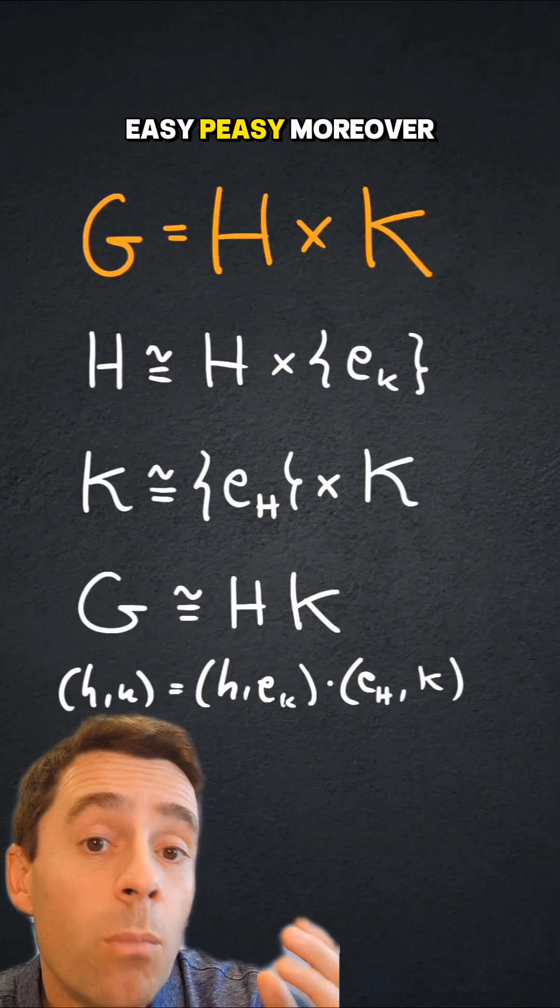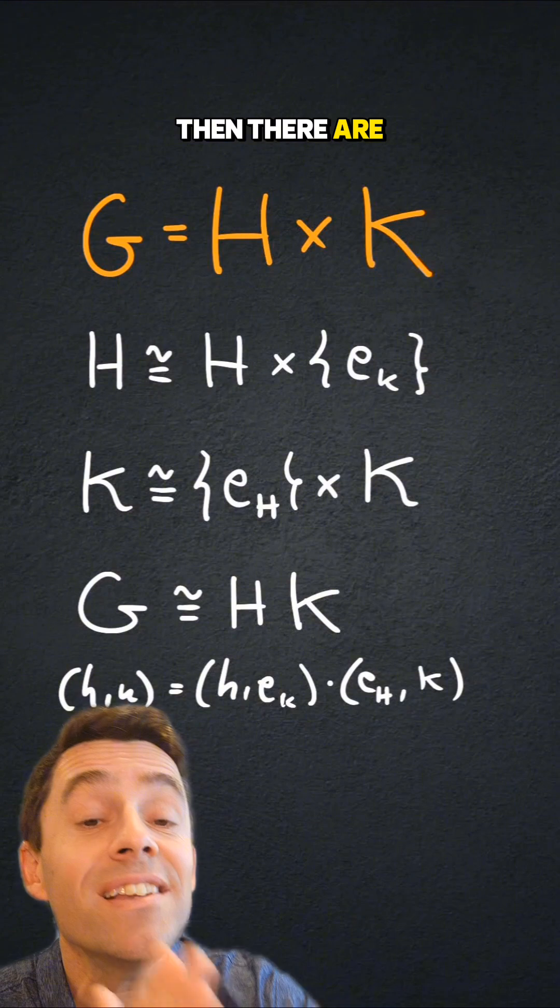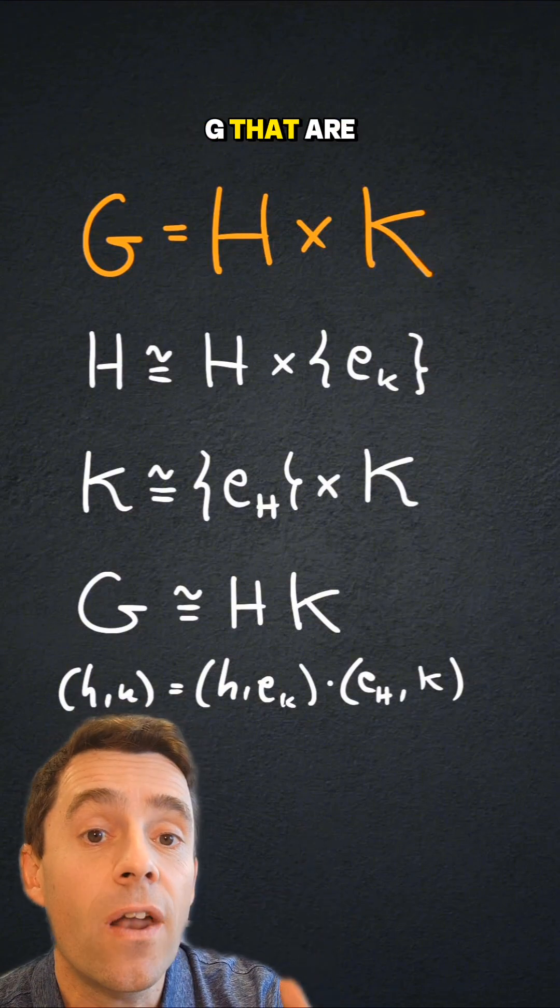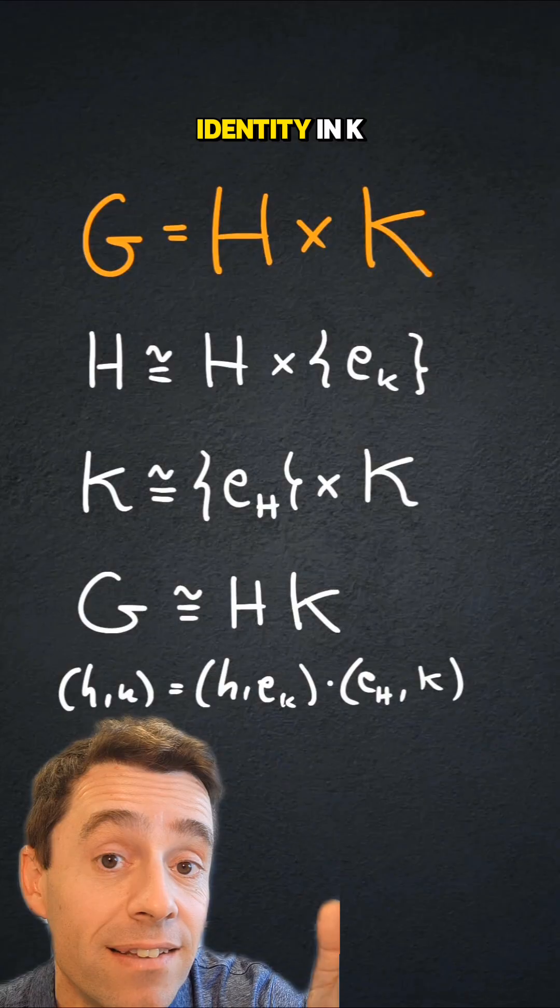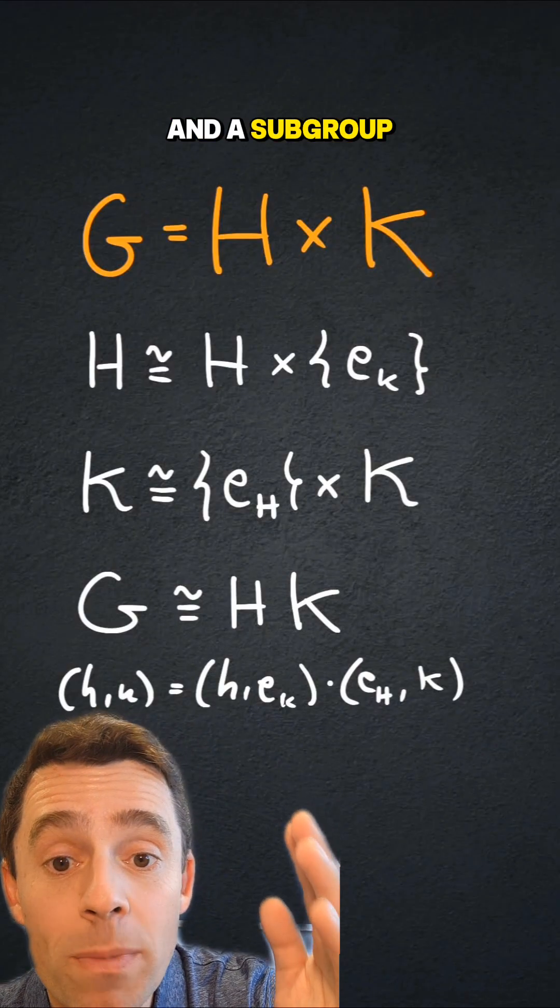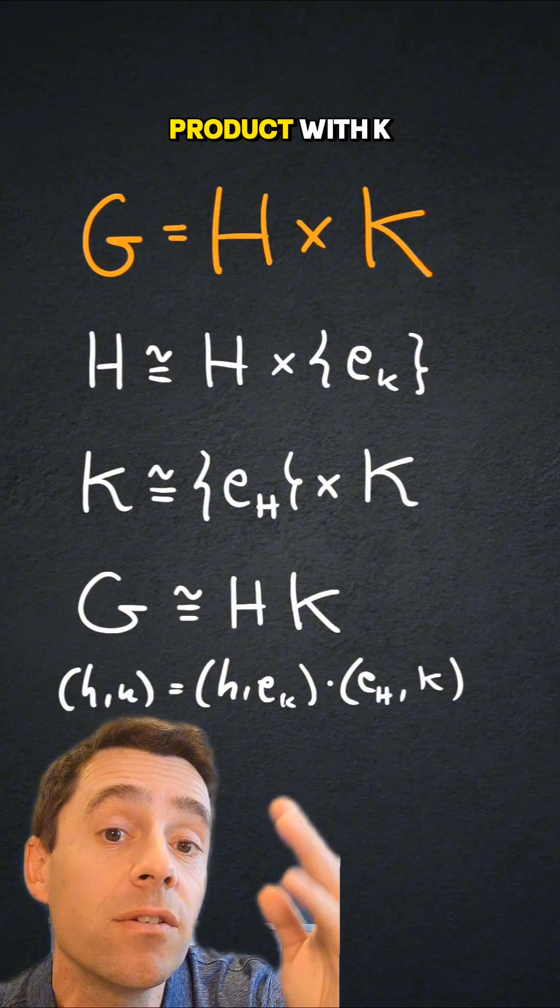Easy peasy. Moreover, if g is the direct product of two groups, h and k, then there are subgroups inside of g that are isomorphic to h, namely h direct product with identity in k, and a subgroup that is isomorphic to k, namely the identity in h direct product with k.